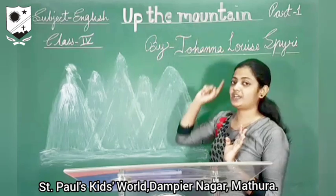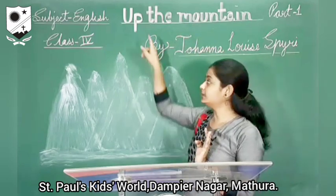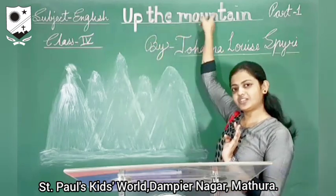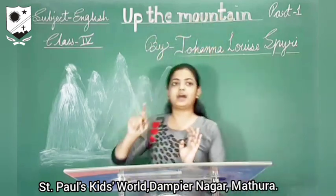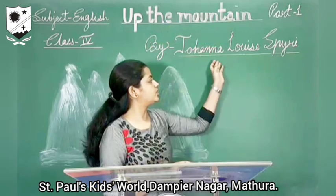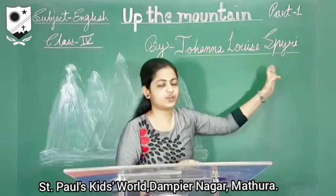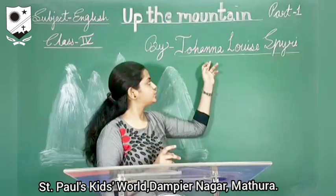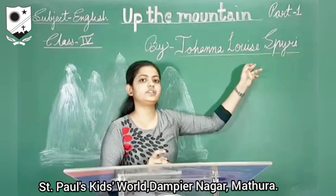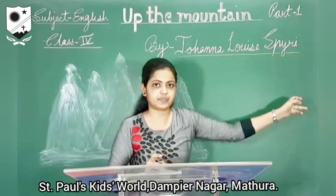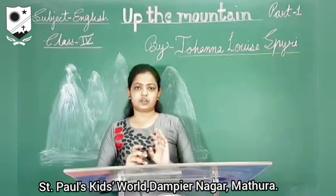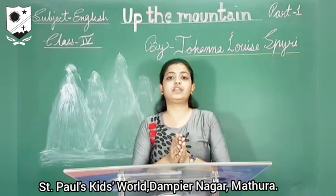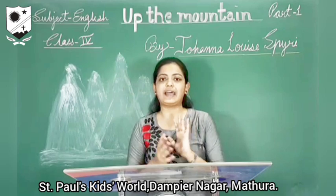The name of the chapter is 'Up the Mountain,' written by John Lewis Spirey. The author of the chapter is John Lewis Spirey. In this chapter you are going to read about the main characters.